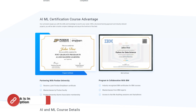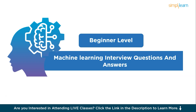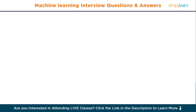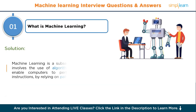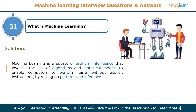So without any further ado, let's get started with beginner level questions. Number one: what is machine learning? Machine learning is a subset of artificial intelligence that involves the use of algorithms and statistical models to enable computers to perform tasks without explicit instructions, by relying on patterns and inference.